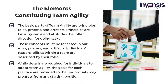The basic parts of team agility are principles, roles, process, and artifacts. Principles are belief systems and attitudes that offer direction for doing tasks and must be reflected in roles, process, and artifacts. Roles describe individuals' responsibilities within a team. Workflow comprises both events and the execution of tasks. Artifacts are information maintained as documents or tools that apply to the job being performed. Each practice and artifact will be given as a maturity spectrum to illustrate available alternatives.